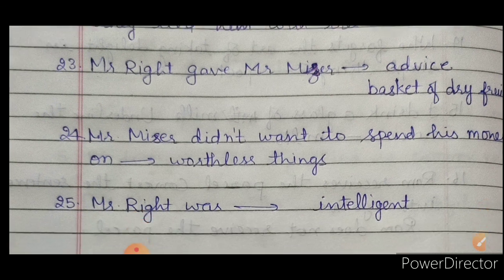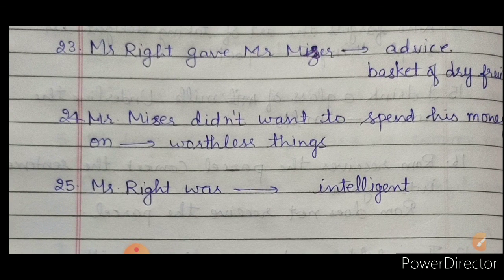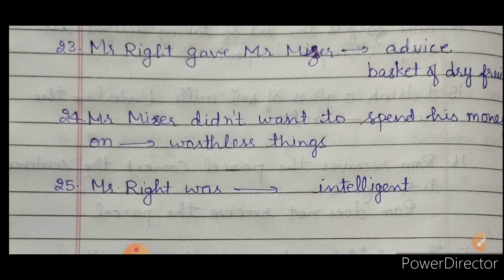The last question: 'Mr. Miser was dash, Mr. Right was dash.' What kind of person was Mr. Right? He was intelligent. And Mr. Miser? He was a miser — a kanjoos. But Mr. Right was an intelligent person. That's all for today.